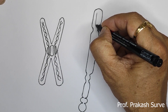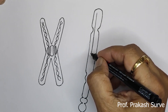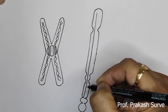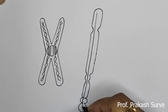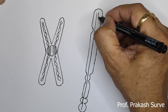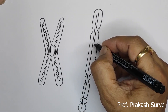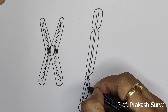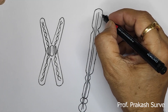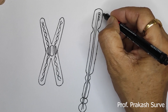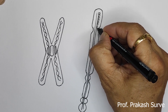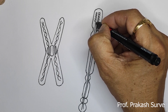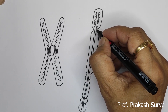From here, make the continuous line — bring it here. Same from here also. You can use a scale for this, no problem. Continue going on drawing like that.